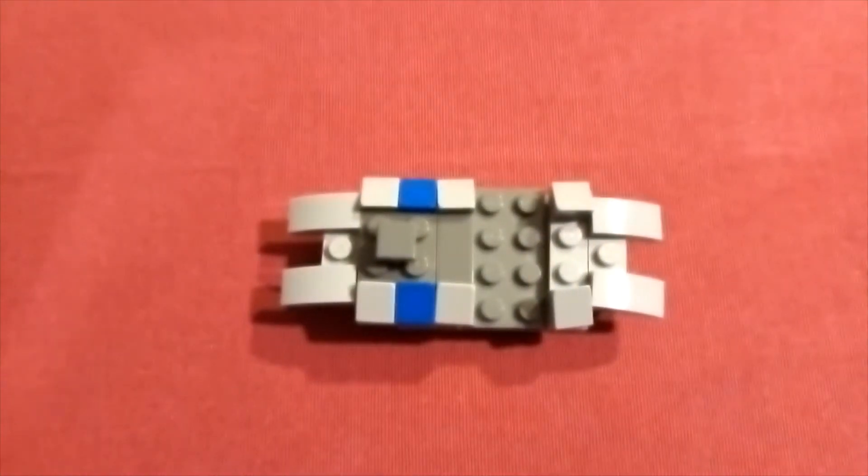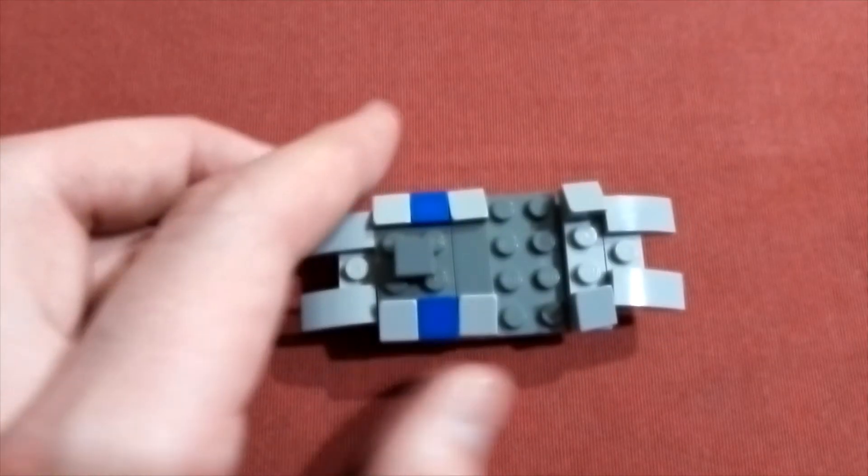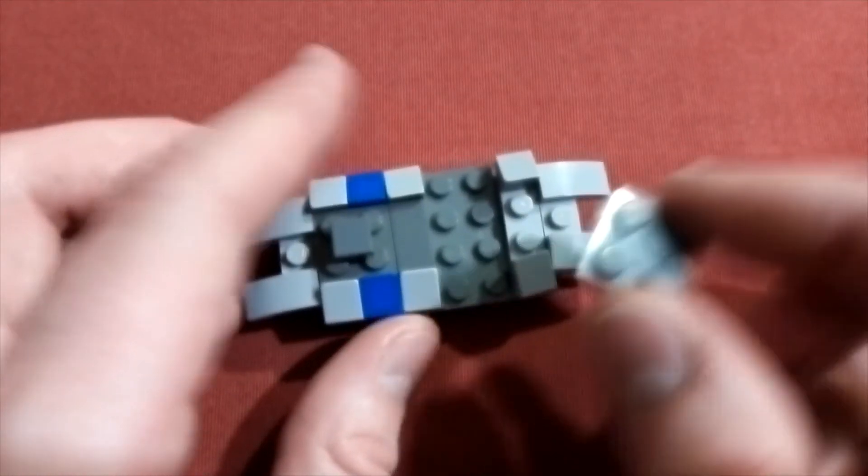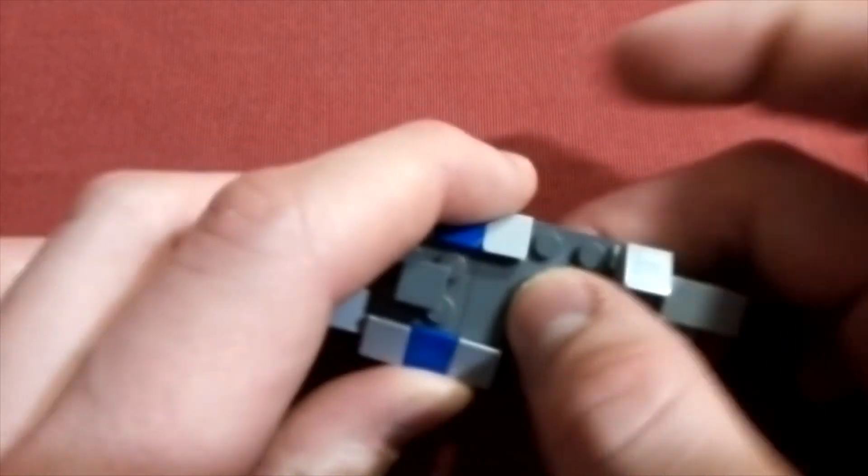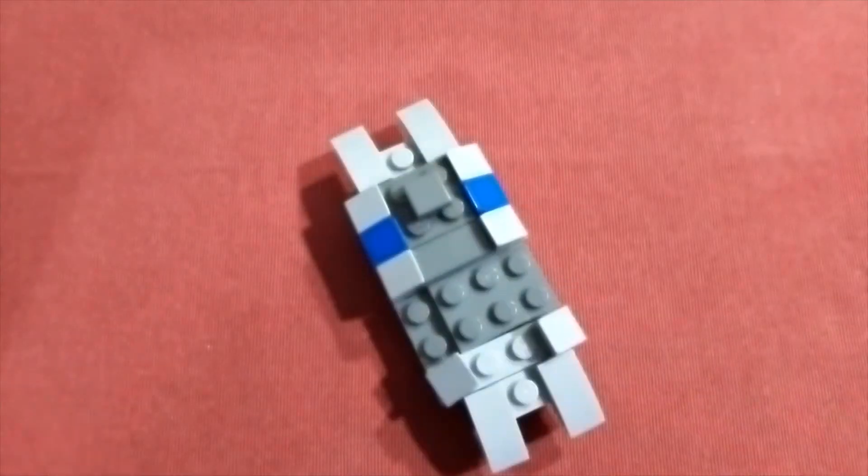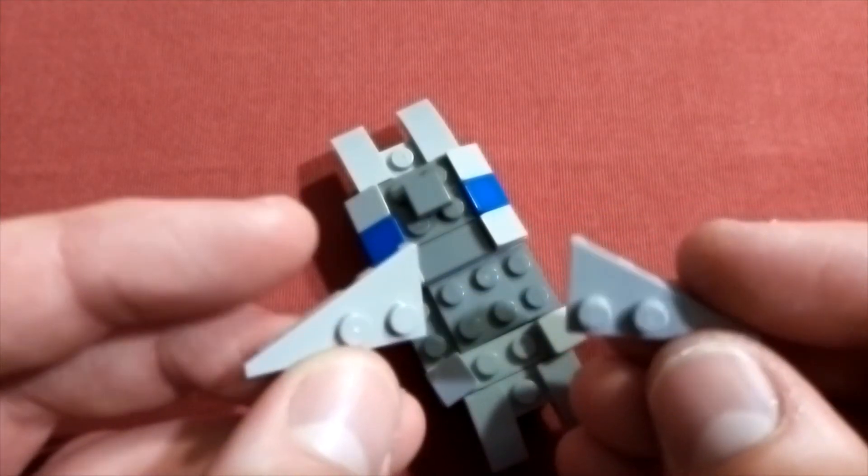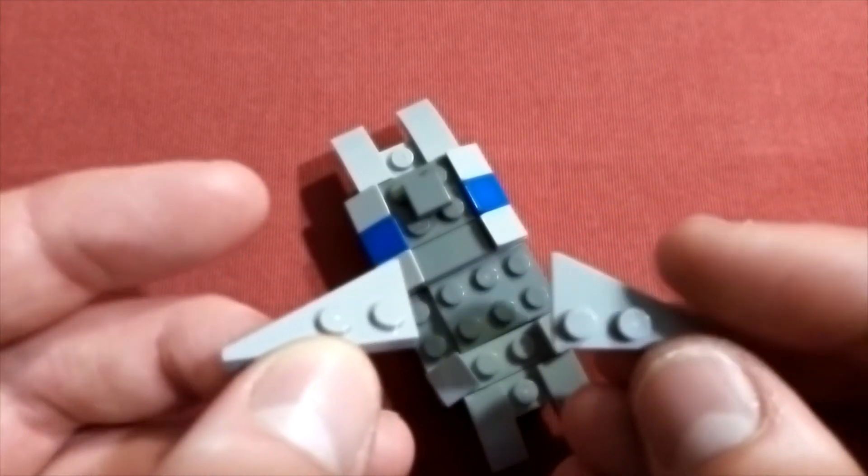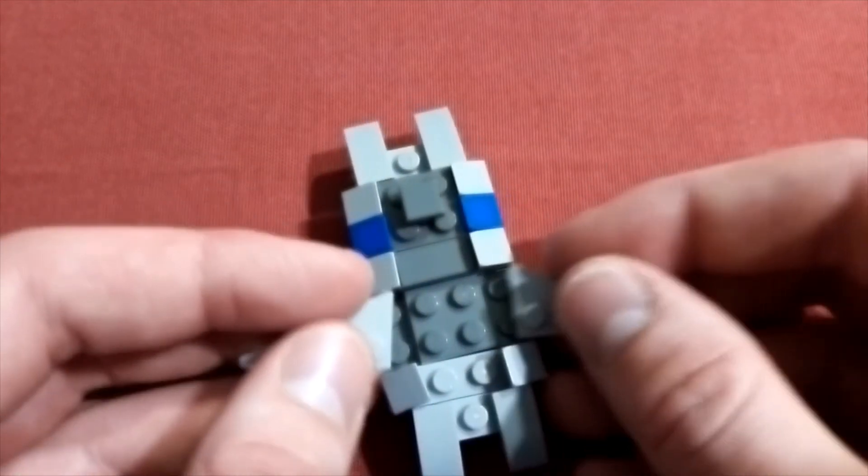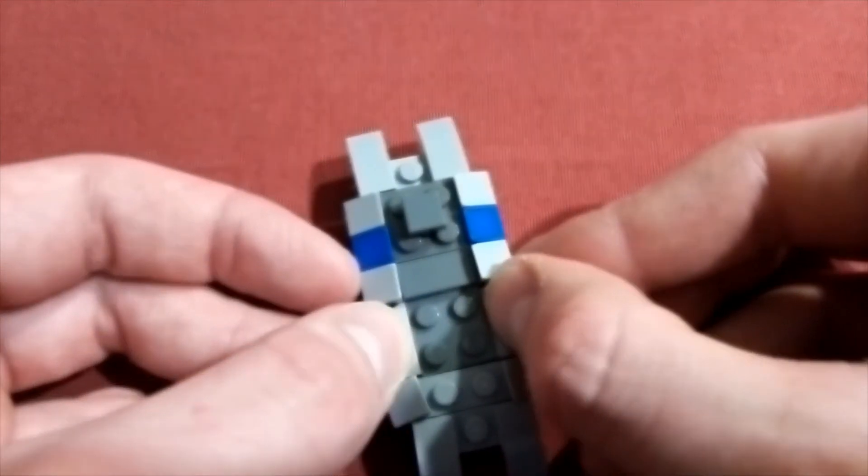Now in the middle of the 2x4 dark grey plate, take a 2x2 dark grey plate and put it on top. Then take one of each side of these wing pieces. They are 2x3.5 I believe. And they go on either side there.